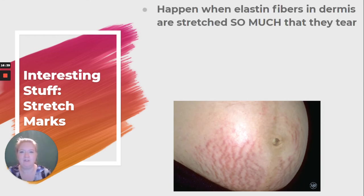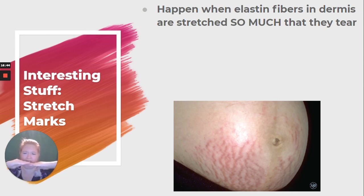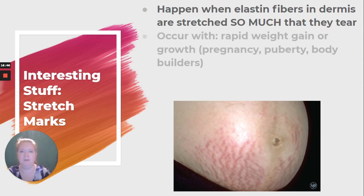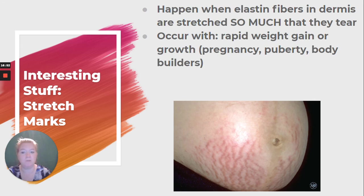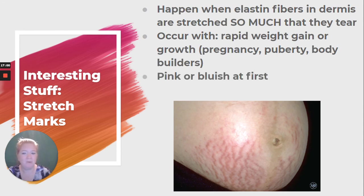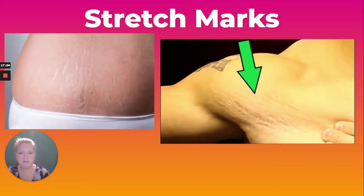Stretch marks happen when the elastin fibers in the dermis are stretched and stretched until they tear. Stretch marks occur with rapid weight gain or growth — the most likely times are pregnancy, puberty, and with bodybuilders. Typically they're pink or bluish at first and can fade to silvery white scars.